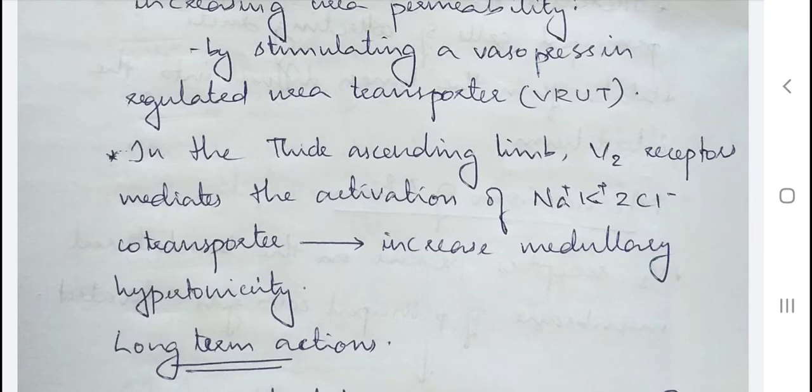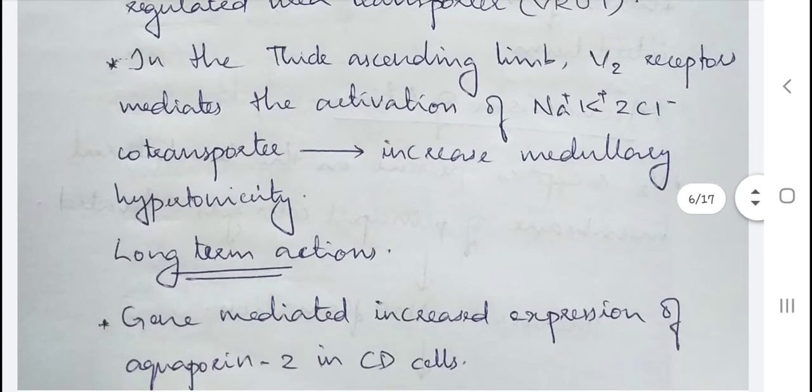Another site of action is the thick ascending limb, where V2 receptors are also present. When AVP acts on these V2 receptors, it activates the Na-K-2Cl cotransporters, increasing medullary hypertonicity. This hypertonicity of the medullary interstitium results in increased water reabsorption, producing antidiuresis.